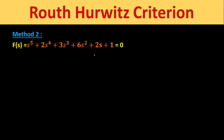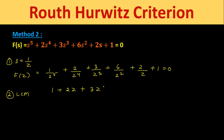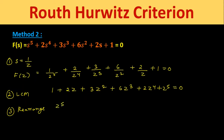Taking the same example and substituting s = 1/z gives F(z) = (1/z⁵) + 2(1/z⁴) + 3(1/z³) + 6(1/z²) + 2(1/z) + 1 = 0. Taking the LCM and multiplying through by z⁵ gives: z⁵ + 2z⁴ + 6z³ + 3z² + 2z + 1 = 0.